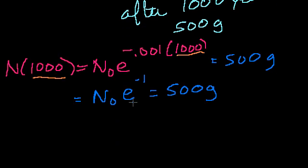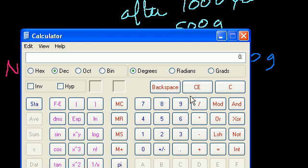Or I could multiply both sides by e and I have n sub 0 is equal to 500e, which is about 2.71.